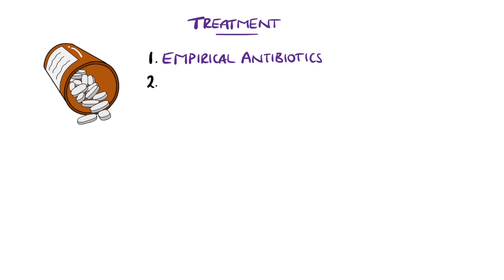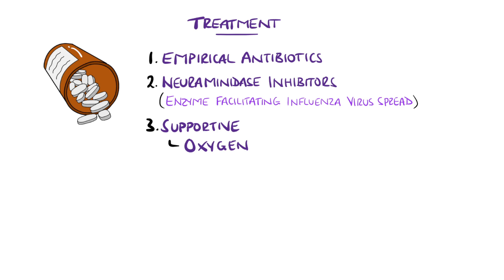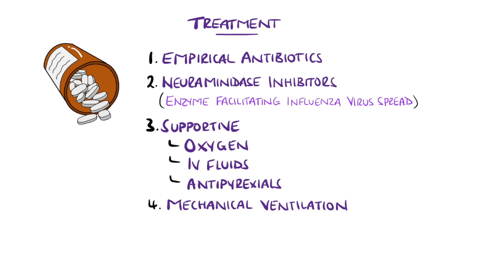Neuraminidase inhibitors are options in viral pneumonia caused by influenza — this is a protein involved in helping the spread of influenza — but this treatment is not generally recommended in other viral pneumonias. In addition to antibiotics, supportive therapy can include supplemental oxygen, intravenous fluids, and antipyrexials such as paracetamol. In severe cases causing respiratory failure, particularly type 2 respiratory failure, mechanical ventilation may be needed.